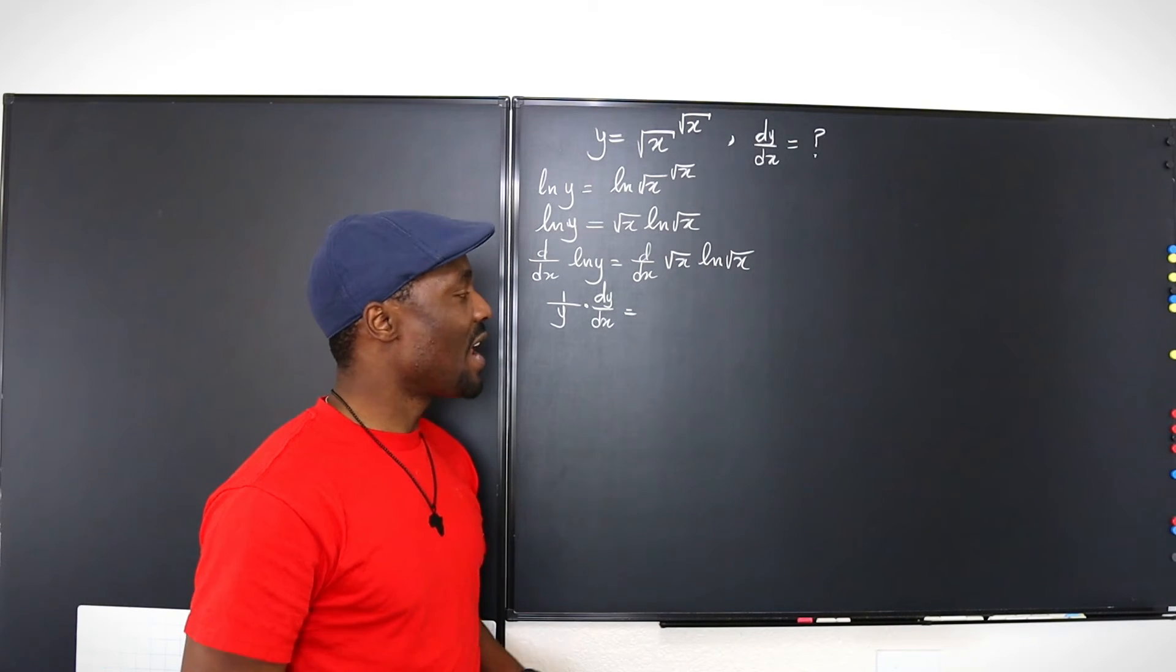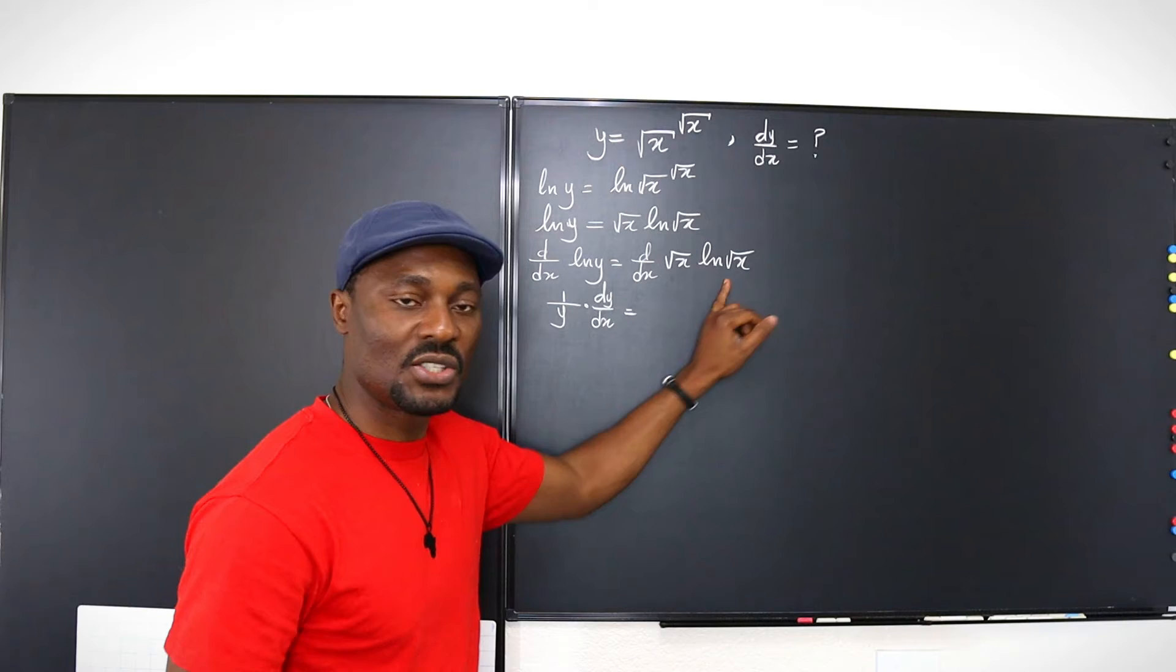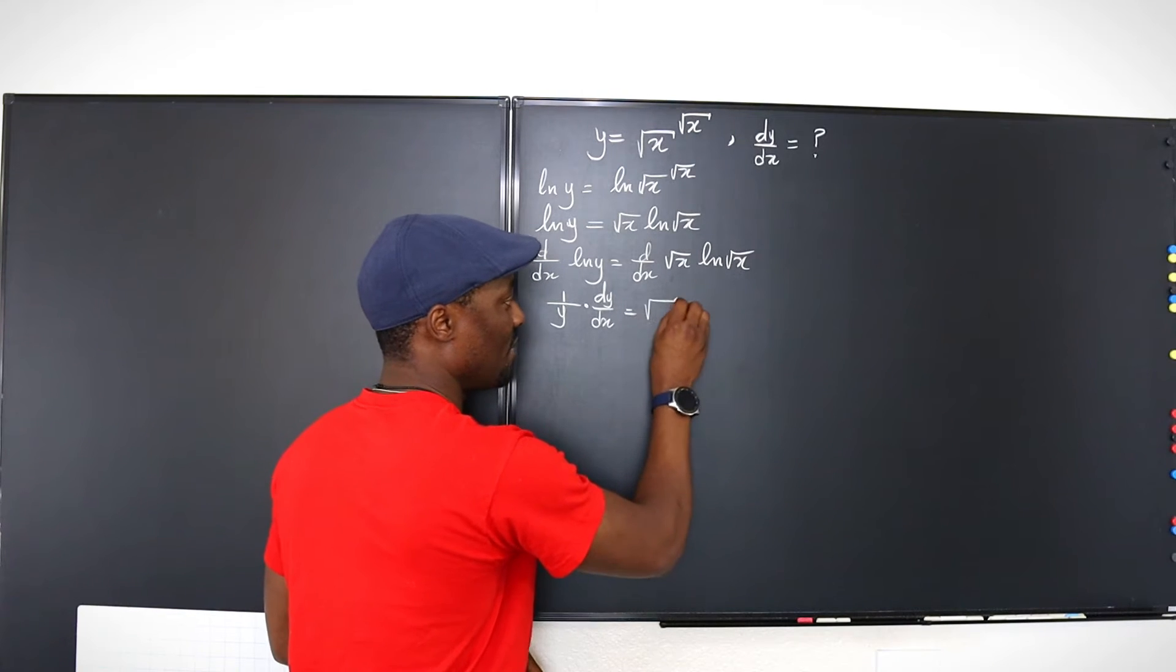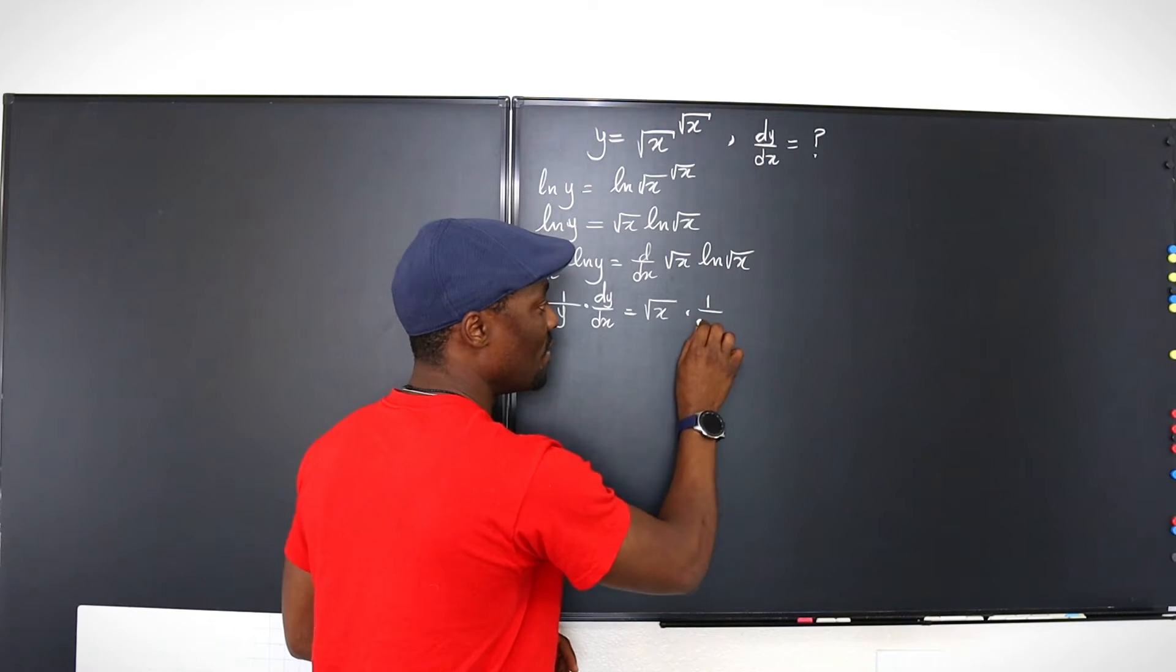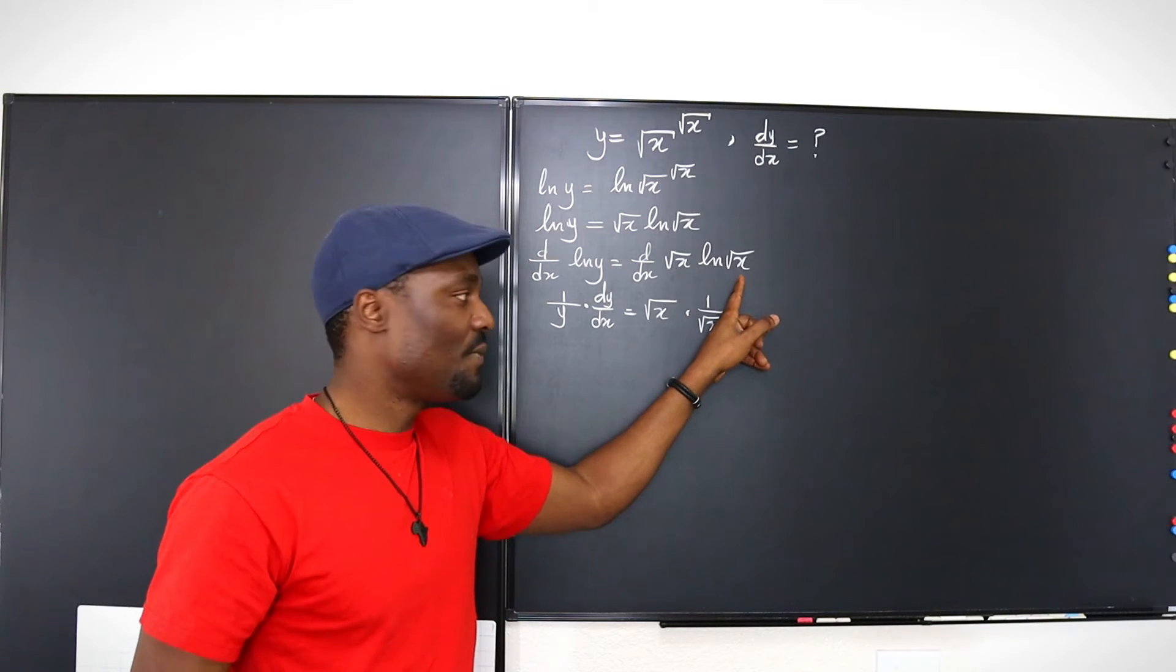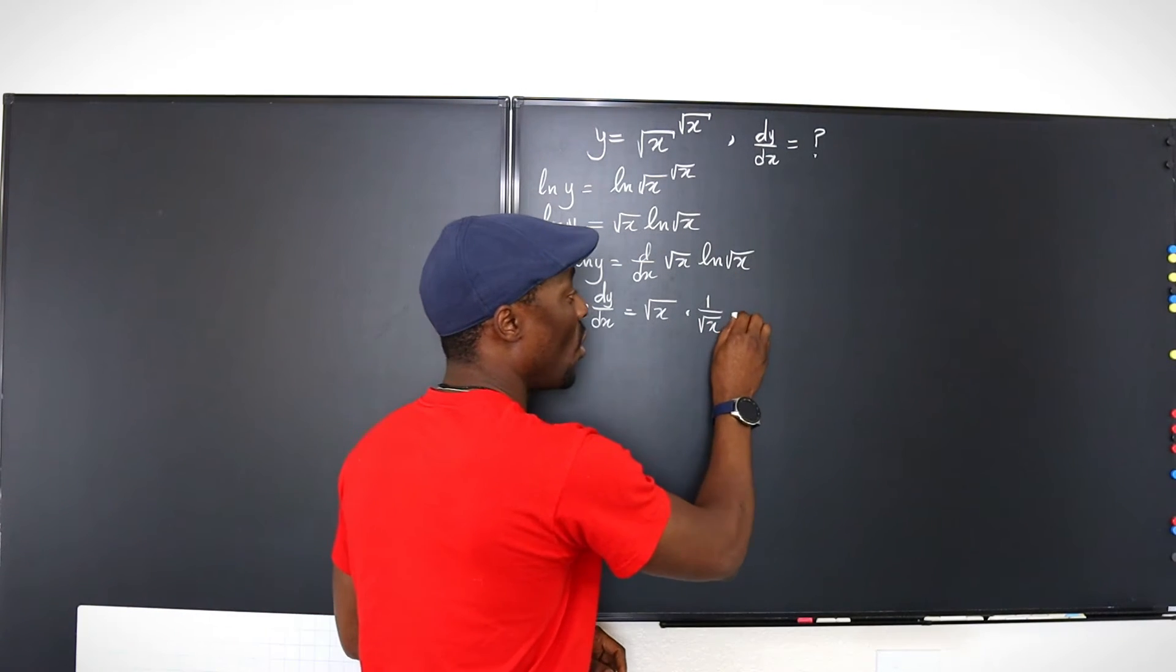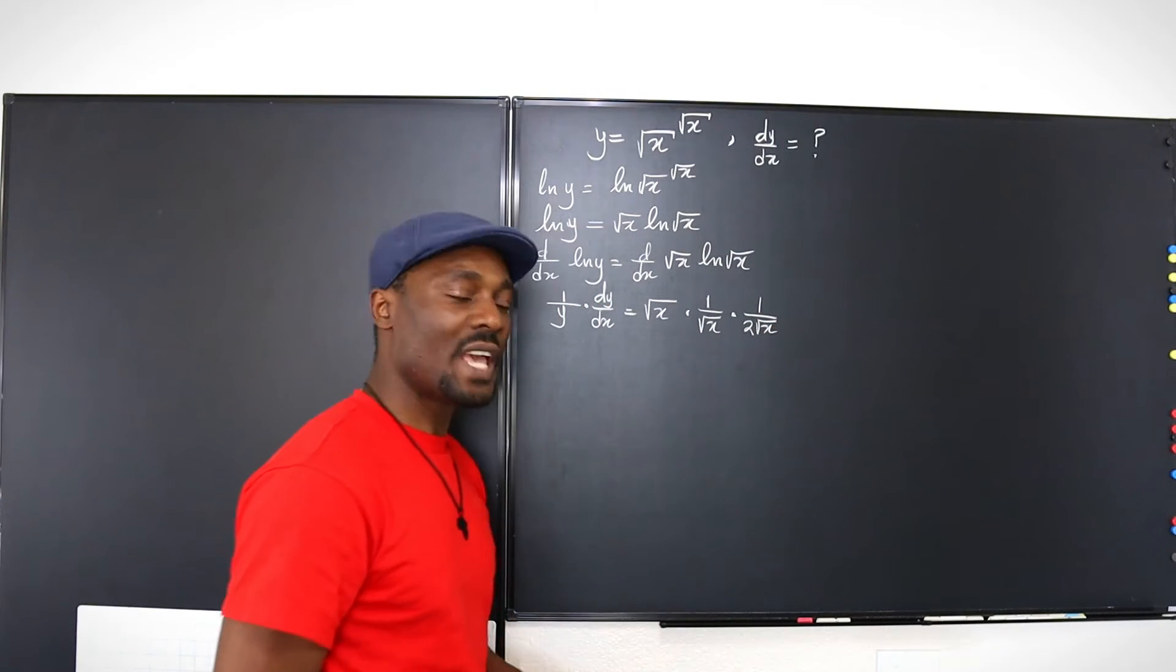Now on this side, we're going to have to use the product rule, which tells you, keep the first, differentiate the second. Keep the first, differentiate the second. If I differentiate ln of anything, it's 1 over that thing. However, that thing itself is a function. So if you differentiate the square root of x, your answer will always be 1 over 2 square root of x.